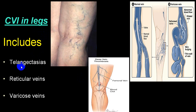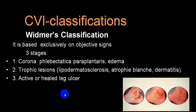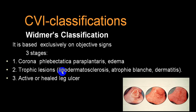Venous insufficiency can lead to telangiectasia, reticular veins, and varicose veins — these three are the most common presentations. According to Widmer's classification: Stage 1 is corona phlebectetica plantaris and edema; Stage 2 is trophic lesions, lipodermatosclerosis, atrophic blanche, and dermatitis; Stage 3 is active or healed leg ulcer.